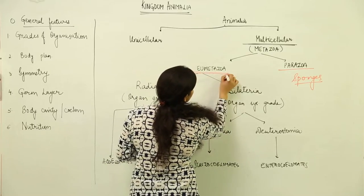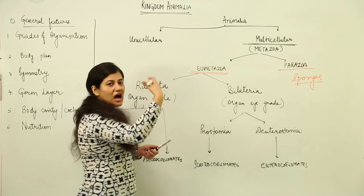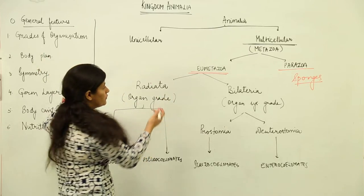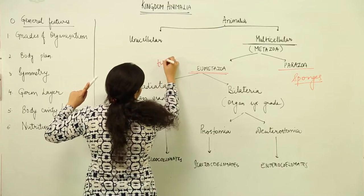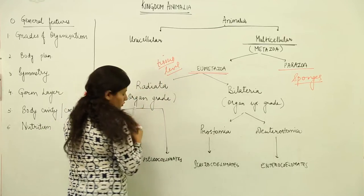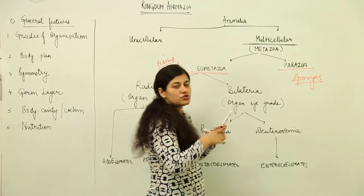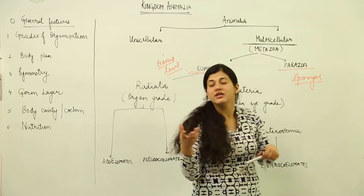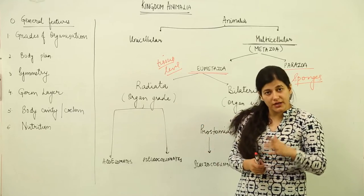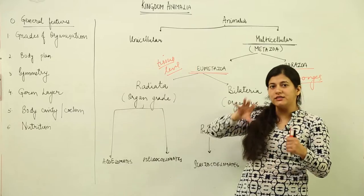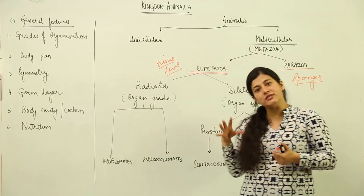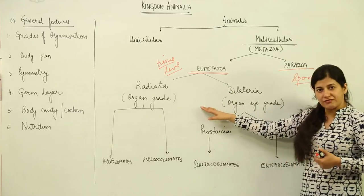Then we have the higher classification that is Eumetazoa — 'eu' meaning true. True Metazoa will have a higher level of organization; the grade of organization would be at the tissue level. These tissues could be organized into organs, or arranged into a higher level known as organ systems. So on the basis of whether tissues are arranged at the organ level or the organ system level, we have further classification.